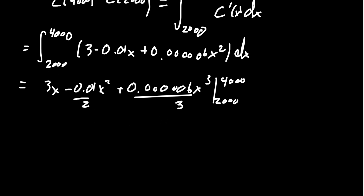All right. We can simplify some of those coefficients. Because we have that 2 goes into 0.01, that'll happen 0.005 times x squared. And then our 3 goes into this as well. We're going to get 0.00002x cubed. Evaluate at 2,000 and 4,000.